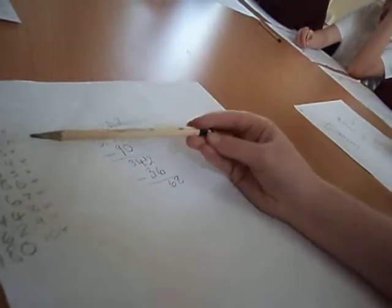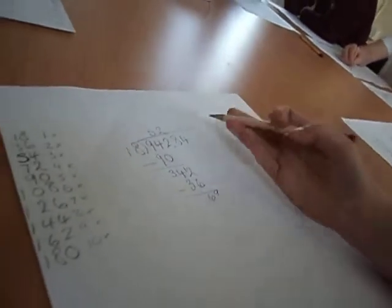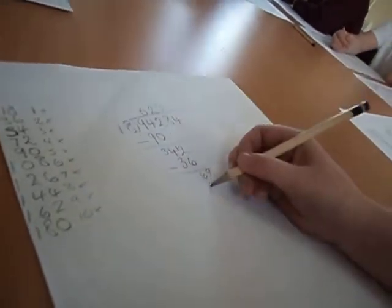The closest number I can get is 3 times 54. So I put 3 up there and my 54 here.